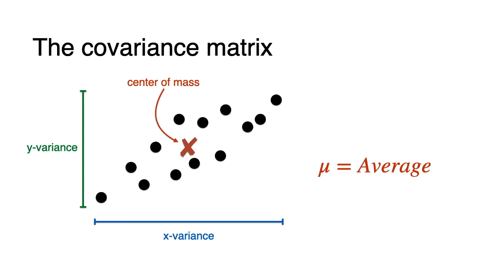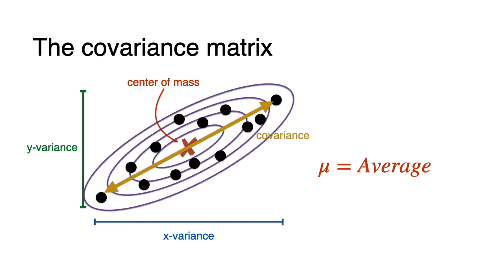However, that doesn't tell us everything because the dataset could be an oval or a circle or different things. Something that will tell us a bit more about the shape of the dataset is the covariance. In this case, it would tell us it's elongated and it points in this diagonal direction. So that tells us a lot about the shape of our dataset. And then we can do things like fit a Gaussian to it.